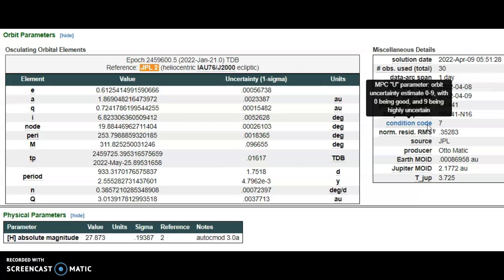With 0 being good, i.e., they know the actual orbit of the rock and size of the rock, and 9 being highly uncertain. It's much closer to 9 than 0, so they have no idea how large the rock is or really where it's going.